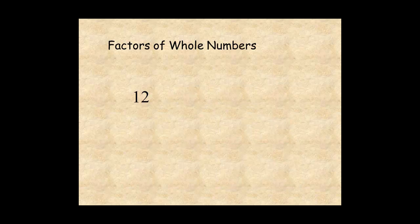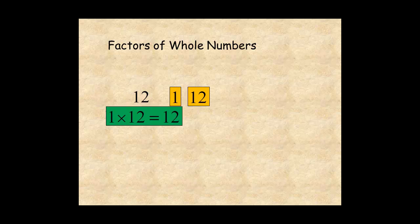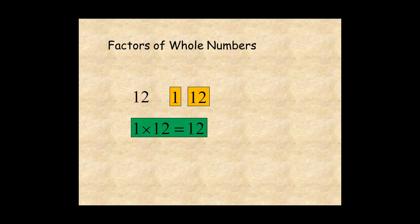Another way to find the factors of a number, think of all the pairs of numbers whose product is equal to the number. For the number 12, 1 times 12 is 12, so 1 and 12 are factors. 2 times 6 is 12, so 2 and 6 are factors.